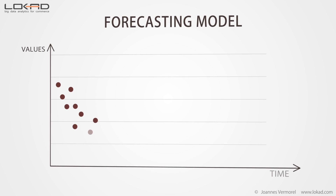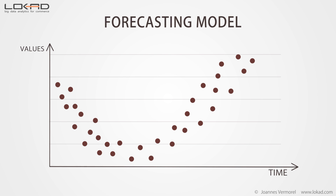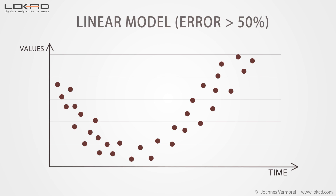Since the 18th century, mathematicians have introduced the notion of a statistical model. The primary aspect of statistical models is not, despite popular belief, to provide good or bad forecasts, but to provide repeatable forecasts. With the statistical model, you get a process that automates the production of forecasts. It does not guarantee that forecasts will be good, but at least if forecasts are poor, you can analyze the model further.